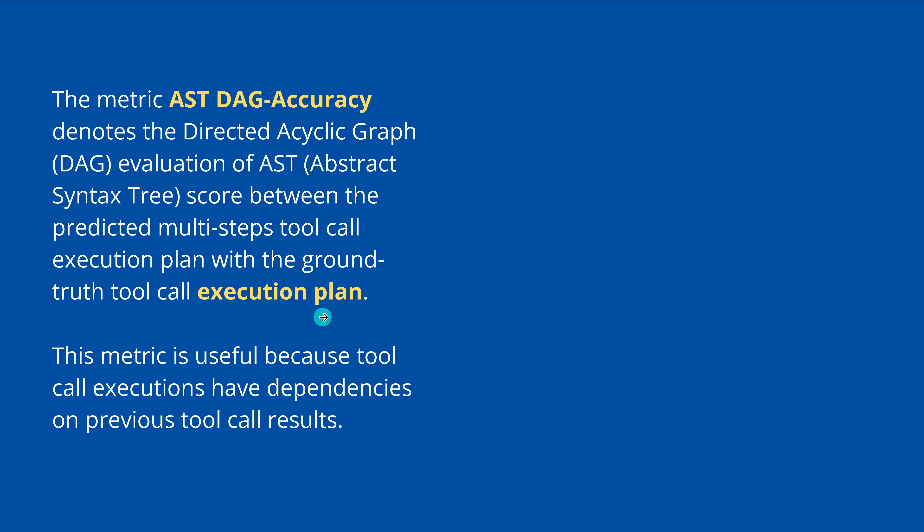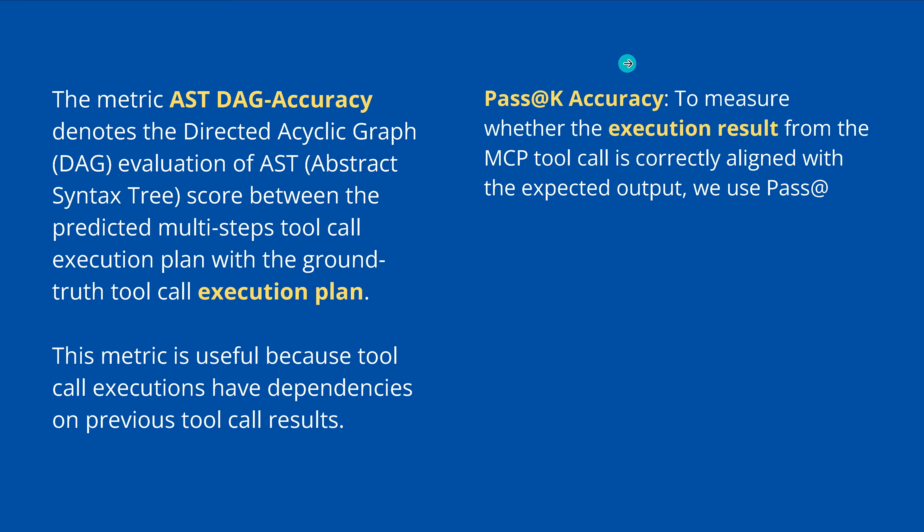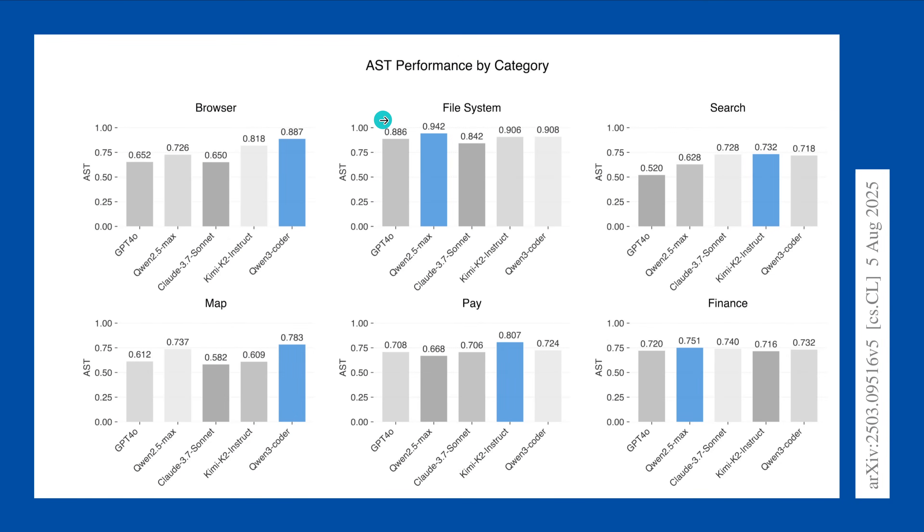But what it does is simply it looks if the ground truth tool call execution plan is really what the LLM comes up with. So you have a plan to plan comparison, which is great if you just want to have the method. But we have to have a real-world result. So if we go to the pass at key accuracy, this measures if the executed result from all the MCP tool calls are correctly aligned with the expected output. Now, at first you think, hey, this is great. Look, the AST performance here for the browser, 65%, 72%, 65%, 80%. So you say, yeah, I can work with this.